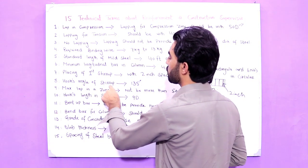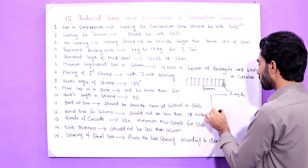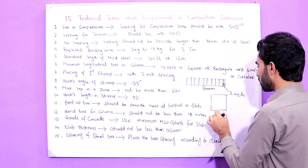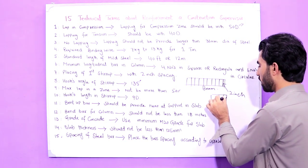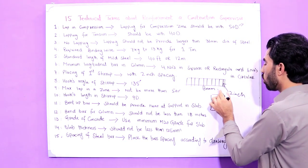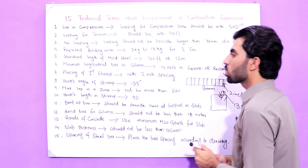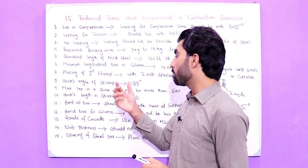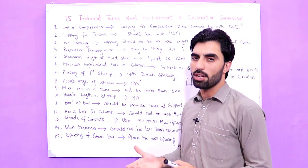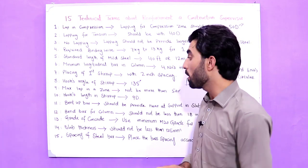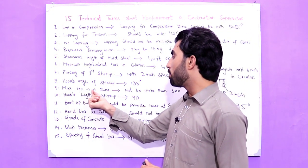The eighth term is the hook angle of stirrups. The hook angle of a stirrup should be 135 degrees — it should not be less than or more than 135 degrees. This is also a common interview question.